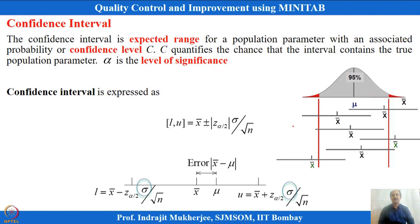So I take one sample and try to predict where the population average will lie. For this, statisticians developed the concept of the confidence interval, which tells me with one estimation of x-bar where the population mean μ is expected to lie.